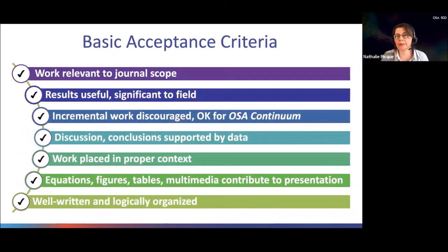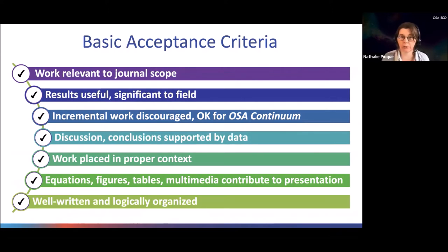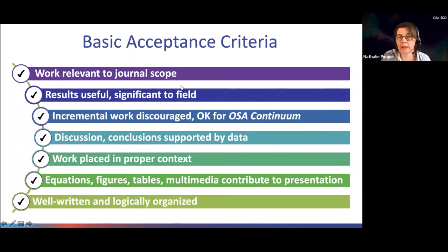The acceptance criteria for journals — here for the Optical Society, but actually they are more or less the same for any peer-reviewed journal — are of several types. First, you need to identify a journal for which your work is well appropriate.